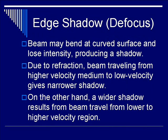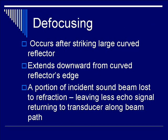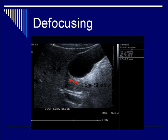The next subcategory of refractive artifact is edge shadowing, otherwise known as defocusing. As beams bend at a curved surface, they lose intensity, producing a shadow around a vessel such as the gallbladder or an organ. A beam traveling from high-velocity to low-velocity medium gives a narrow shadow; from slower to faster, you get a wider shadow. Defocusing occurs classically after striking a large curved reflector, such as a vessel or gallbladder wall, and extends downward from the curved reflector's edge. Because a portion of the incident sound beam is lost to refraction, less echo signal returns to the transducer, explaining the dark anechoic characteristic of the shadowing phenomenon.